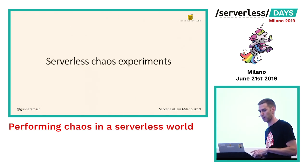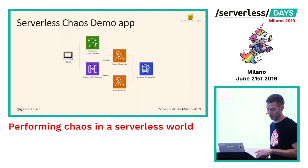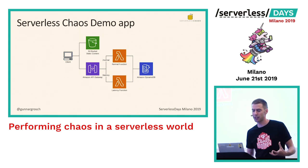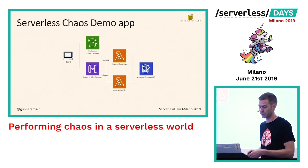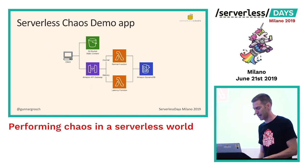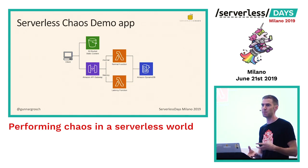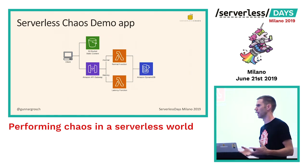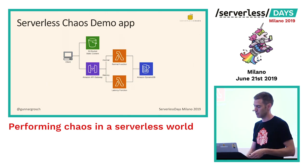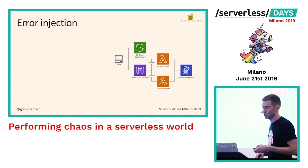Welcome to the serverless chaos demo app. The architecture is quite simple: it's a website that uses static content from an S3 bucket. It has an API Gateway with two different Lambda functions behind it — one normal, one latency. And then there's a DynamoDB table. The web page loads images that reload on a five-second interval. Each time it invokes a Lambda function, which gets data from DynamoDB with the URL to the image stored in S3.